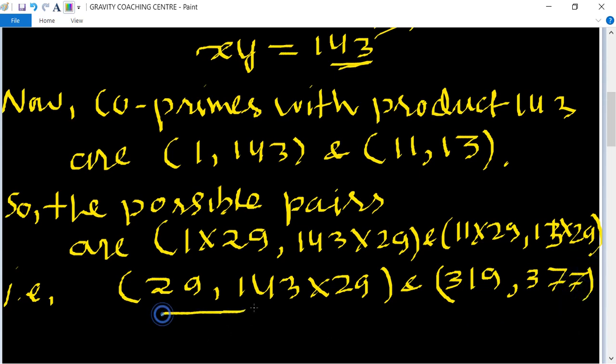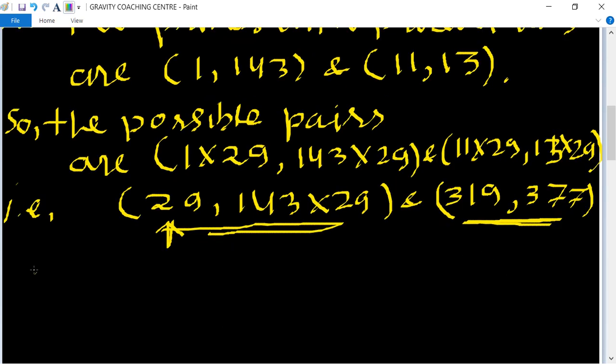So we can't take this pair because the first number is not greater than 29. So the two numbers is this one. Therefore required sum equal to: